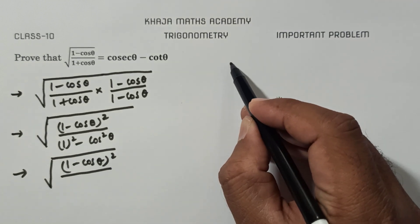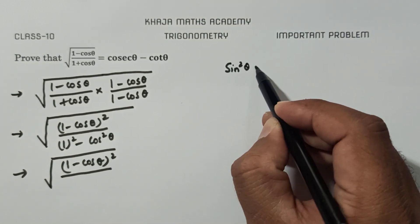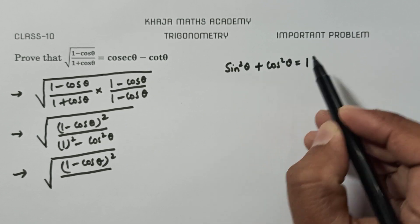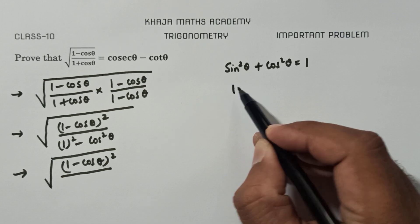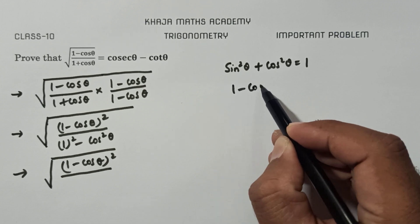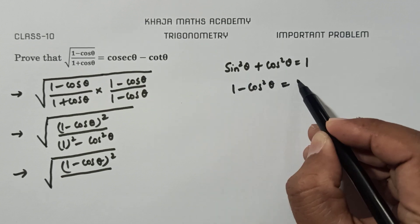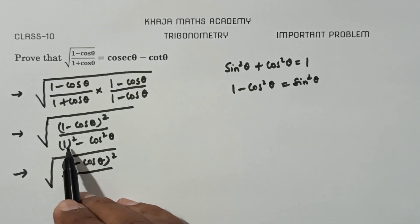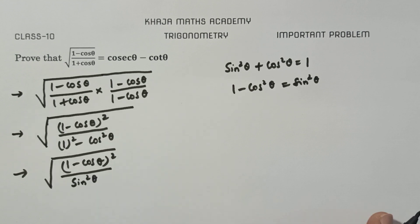Since sin²θ + cos²θ = 1, we know that 1 - cos²θ = sin²θ. So replace the denominator: (1 - cos²θ) can be written as sin²θ.